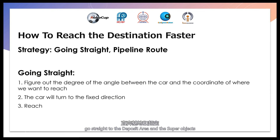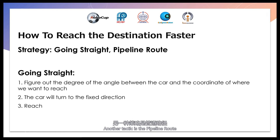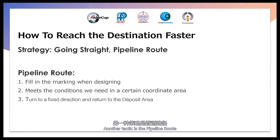One of the tactics is to go straight to the deposit area and the super objects. We first need to figure out the degree of the angle between the car and the coordinates of where we want to reach. Then, we could generally get the car reaching there.